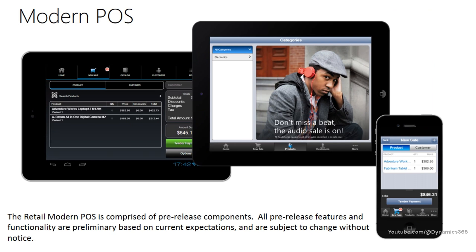Microsoft Dynamics AX 2012 R3 includes a Modern POS, which is a point of sale application for PCs, laptops, tablets, and phones. Sales staff at the store can process sales transactions, customer orders, or perform daily operations or stock operations with mobile devices using the Modern POS application. Note that the Retail Modern POS is comprised of pre-release components at the time of recording this course. All pre-release features and functionality are preliminary, based on current expectations, and are subject to change without notice.